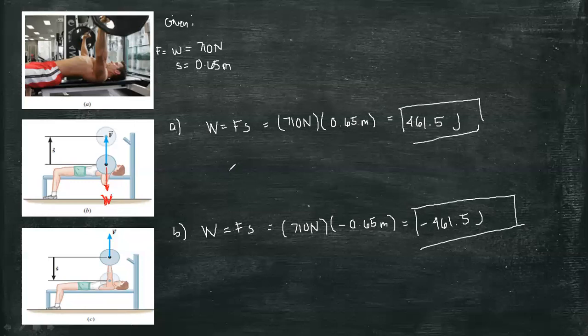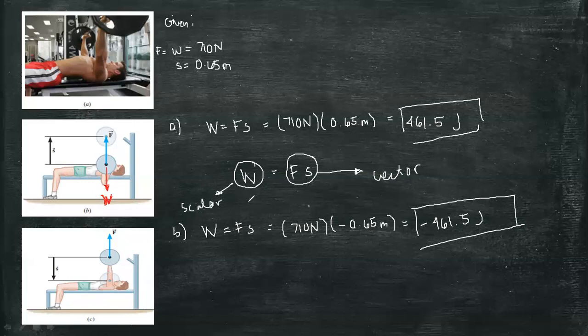Work is equal to force times the displacement. We know that force and displacement are both vector quantities, but work is a scalar quantity. So meaning, scalar represents the magnitude, it has no direction, but we have a positive work, negative work, and zero work.